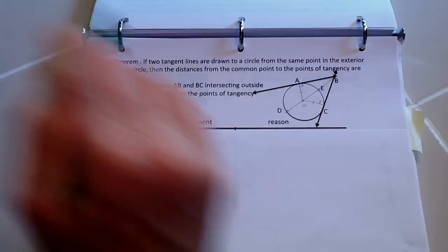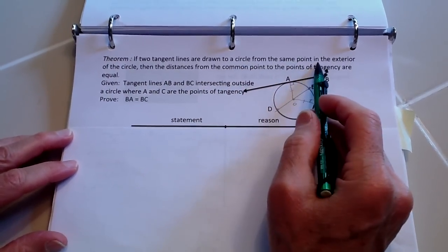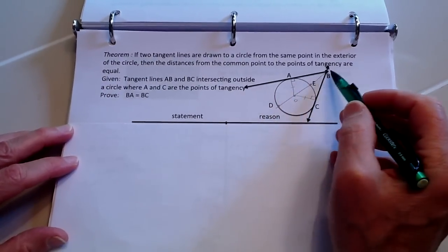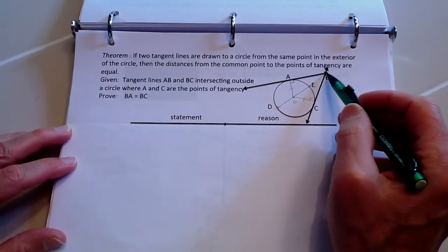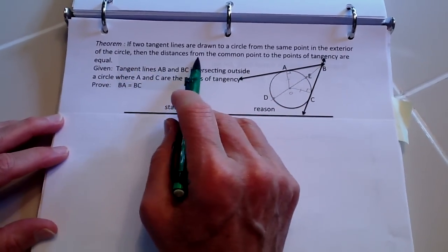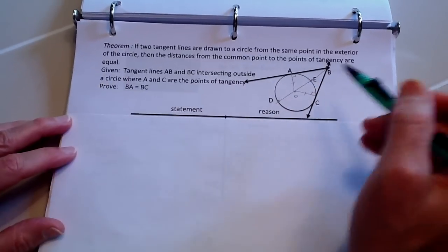Now this theorem: if two tangent lines are drawn to a circle from the same point in the exterior of the circle, they meet up here at B, then the distances from the common point to the points of tangency are equal.